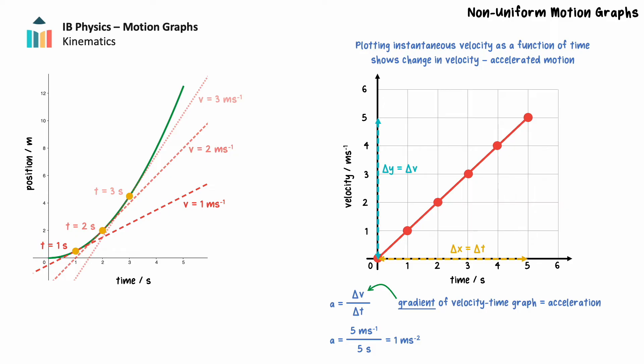If we assumed that the velocity over the time period was constant and equal to the average velocity over the whole time period, the graph would look like this instead. By plotting the average velocity, we are not able to determine the acceleration as there does not appear to be a change in velocity. When an object has non-uniform motion, the instantaneous rather than the average velocity provides significantly more information and allows us to calculate the object's acceleration.